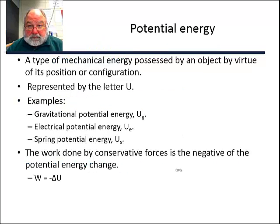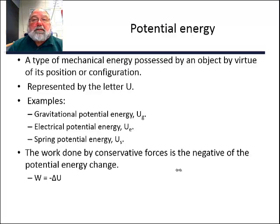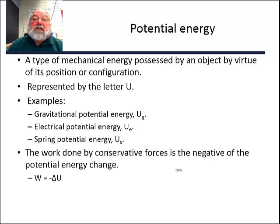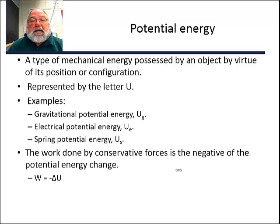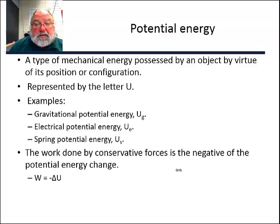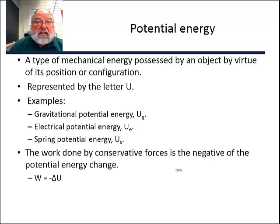Potential energy is a type of mechanical energy possessed by an object by virtue of its position or configuration. In chemistry, the energy of a molecule depends upon the arrangement of the atoms. In mechanics, the position of the object above the ground determines the object's potential energy. We represent potential energy with the symbol U. Examples are gravitational potential energy — how high you are above the Earth's surface, U sub G; electrical potential energy, U sub E, like the energy contained in a battery; and spring potential energy, U sub S.